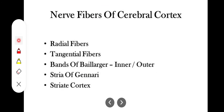Now we have the types of fibers in the cerebral cortex. Number one is the radial fibers. If this is the cerebral cortex, these are vertically oriented at right angles to the cortical surface. Examples include the axons of the pyramidal cells and the axons of the fusiform cells — they are all radially arranged, so these are radial fibers.